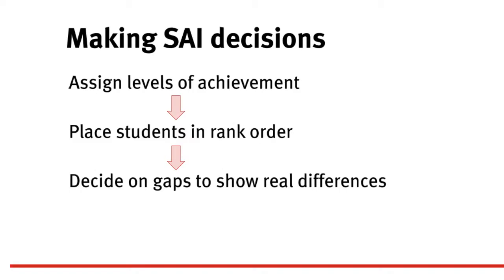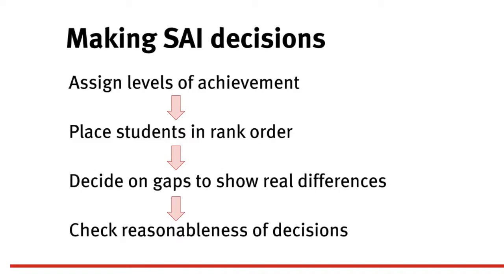The final step in the process is to check the reasonableness and accuracy of the decisions made to make sure that the SAI distribution really does represent the differences between students' performance. Sometimes teachers think that if they submit SAIs to the QSA, then it's our job to check them and contact the school if there are any issues. While we do check the reasonableness of every distribution submitted, only teachers themselves know whether the SAIs are the best representation of the differences and similarities between their students.